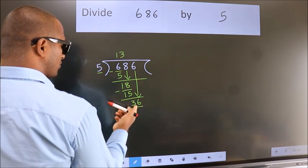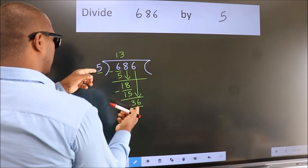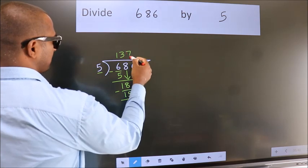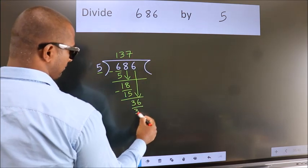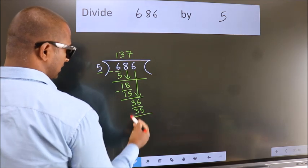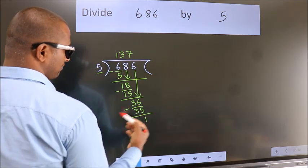A number close to 36 in 5 table is 5 sevens, 35. Now we subtract. We get 1.